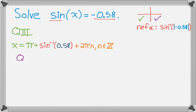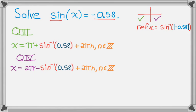So let's move on to quadrant four. So in quadrant four, I know that the way to get the angle, so x is going to be, I'm going to say 2π minus the reference angle. So minus the reference angle, which is inverse sine of 0.58. And then we can wrap that around.